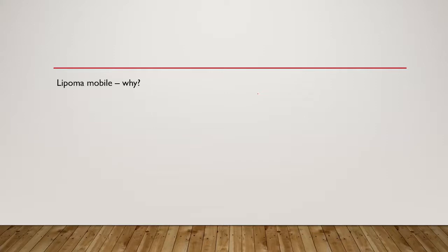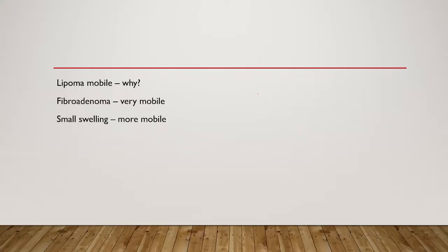Now think — what causes the swelling to be mobile? We find that lipoma is very mobile, and even fibroadenoma of the breast is very mobile — we call it a breast mouse. To be mobile, the surface should be slippery as well as the content should also be slippery. Lipoma contains adipose tissue, which is fat, and fat is a slippery substance. Fibroadenoma of the breast contains a huge amount of fats, so it moves rapidly. A smaller swelling with no attachments, no adhesion, and no inflammation will be more mobile.